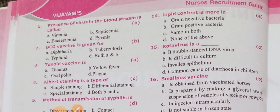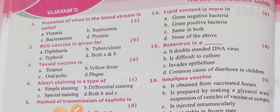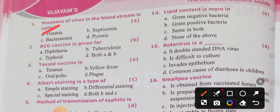Presence of the virus in the bloodstream is called viremia. Virus in the bloodstream is the correct answer. Next, BCG vaccine is given for dash — to prevent tuberculosis.